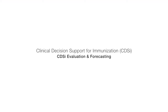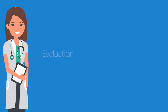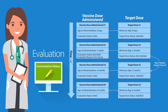Two important functions of a Clinical Decision Support, or CDS engine, are evaluation and forecasting. First, we must evaluate a patient's immunization history to determine if a vaccine dose administered is valid or not valid for that specific target dose or patient-specific dose required to satisfy the recommendations of ACIP. Until a target dose is satisfied, the patient is not allowed to move to the next target dose in the patient series.